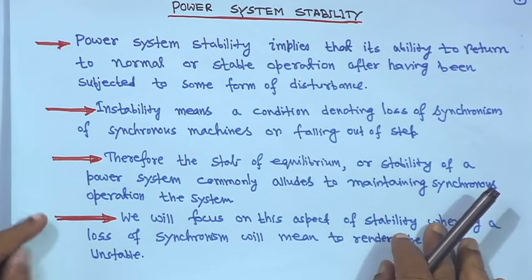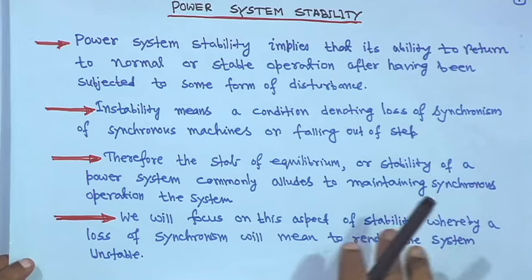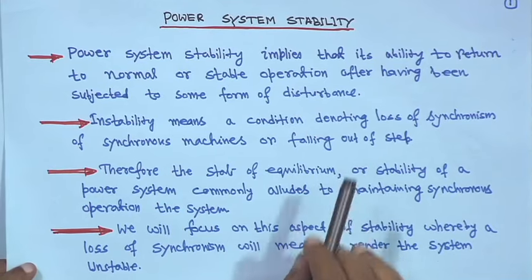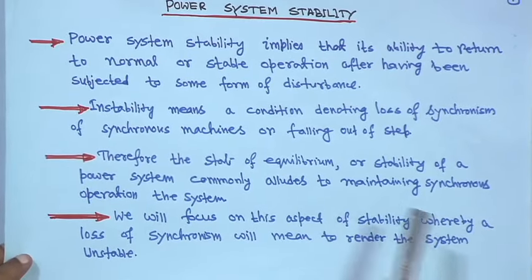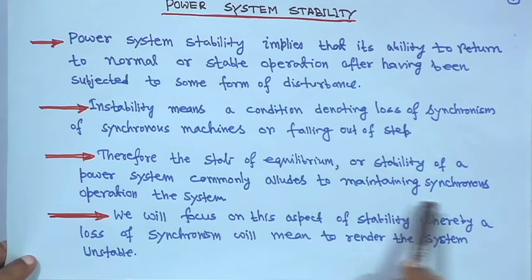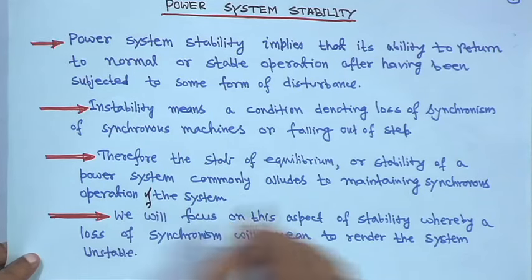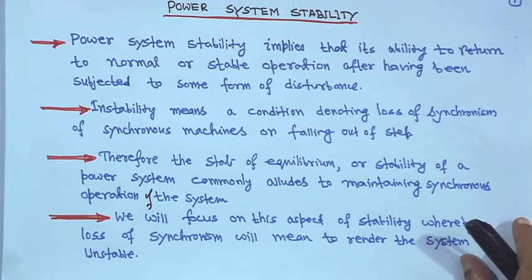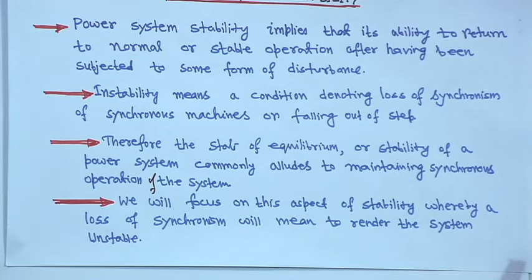Stability itself is a huge topic, but we will restrict it to the undergraduate level for this course. Therefore, the state of equilibrium or stability of a power system commonly alludes to maintaining synchronous operation of the system. We will focus on the aspect of stability whereby a loss of synchronism will render the system unstable. The synchronous machine should never lose synchronism and should not fall out of step, and the system will remain stable.